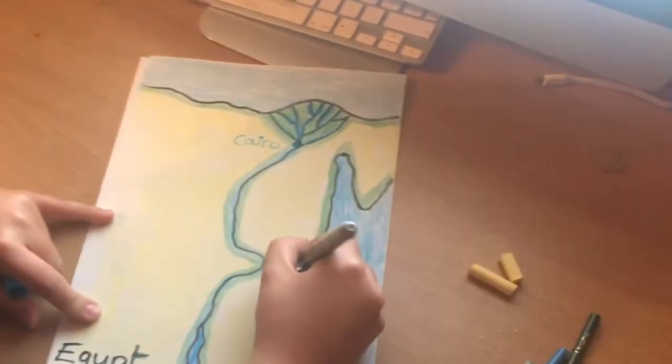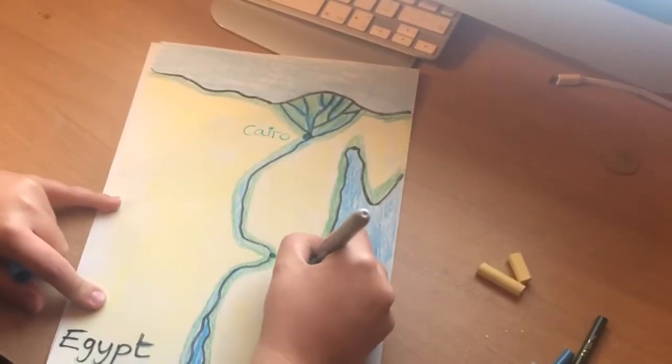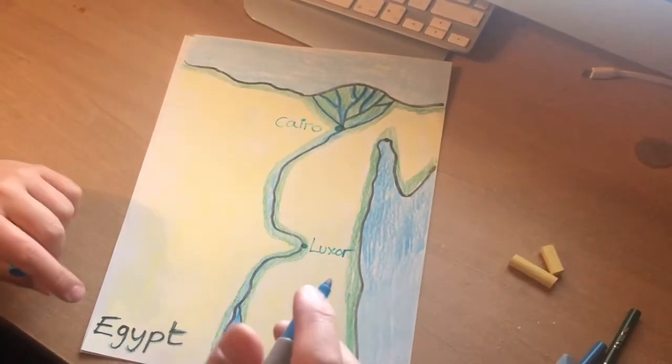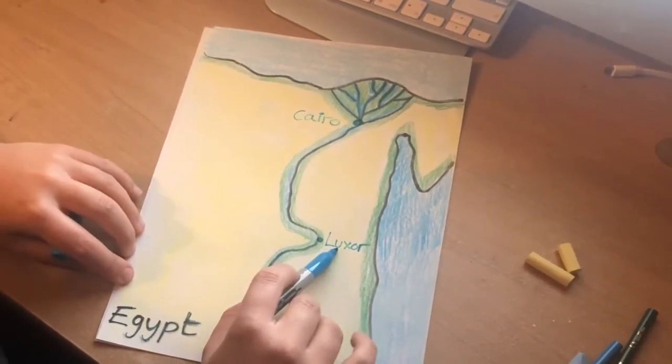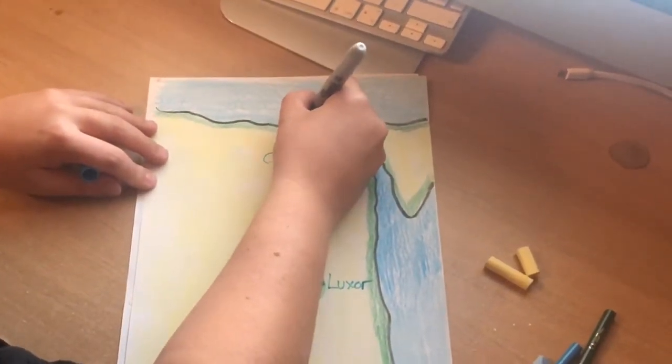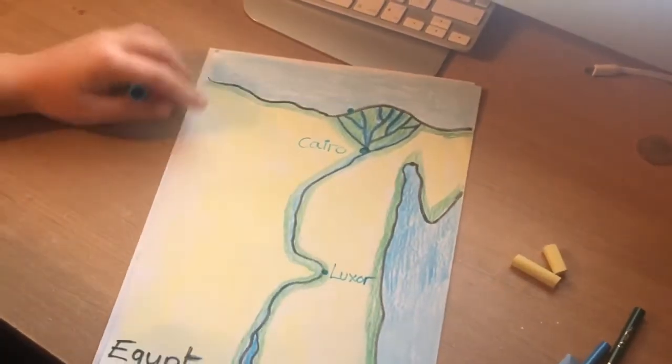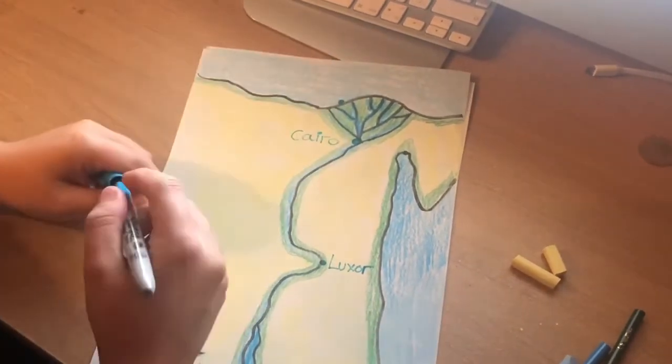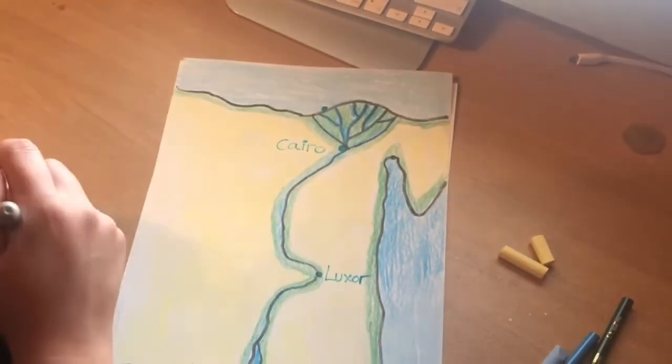Where the Valley of the Kings was, where Tutankhamun's tomb was found, that's in Luxor. And then I'm going to label Alexandria, that's at the top here of the tributaries and on the coastline.